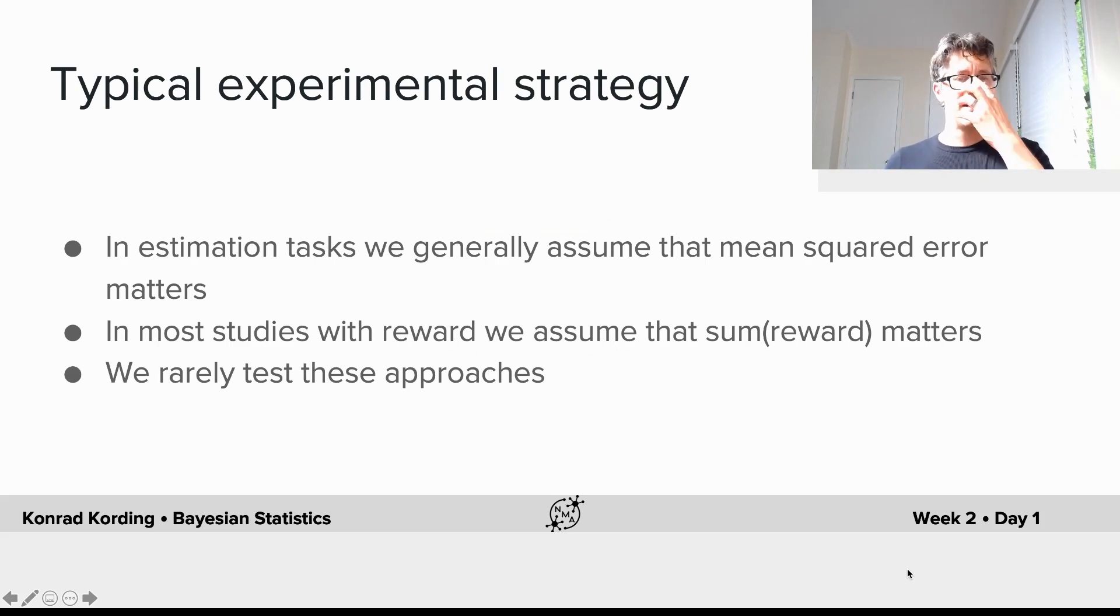So what's the typical experimental strategy? In estimation tasks we generally assume that mean squared error is what matters. In most studies with reward we assume that the sum of the reward matters.